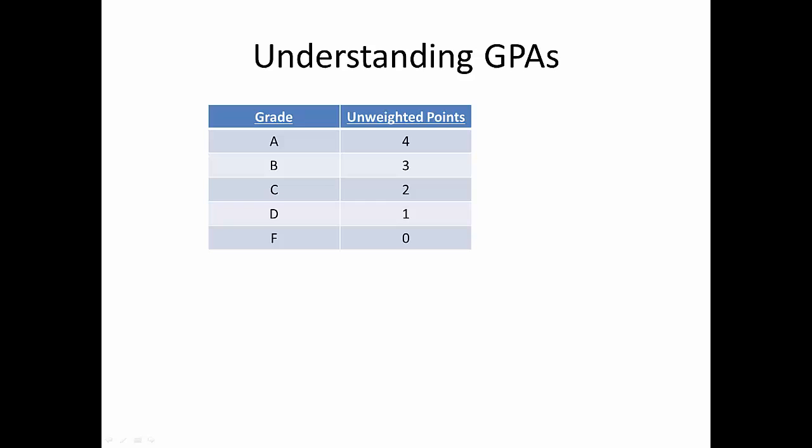To understand this study, it is first important to explain high school grade point averages. In most American high schools, students earn grades ranging from A to F, and those grades are combined to form a grade point average, or GPA. In a traditional GPA system, an A is worth 4 points, a B worth 3 points, a C is worth 2 points, a D is worth 1 point, and an F is worth 0 points.